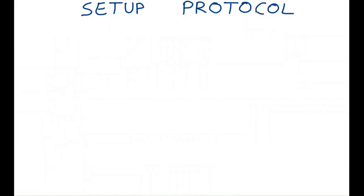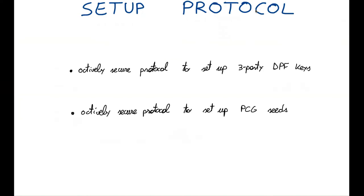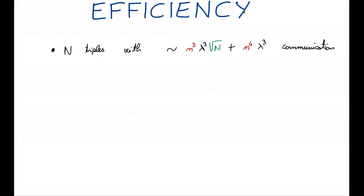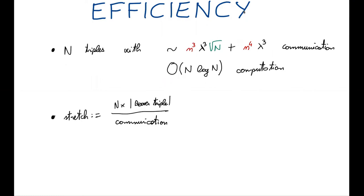After designing our PCG, we focused on the protocol for the generation of authenticated beaver triples. In particular, we designed an actively secure protocol that sets up the three-party DPF keys, and another protocol that generates and distributes the PCG seeds with active security and linear communication. Our protocol generates n authenticated beaver triples with sublinear communication in n — specifically O(sqrt(n)) — though there is a term that scales as the number of parties to the fourth, so for a very large number of players our solution may not be the best. Regarding computation, the complexity scales as n log n.